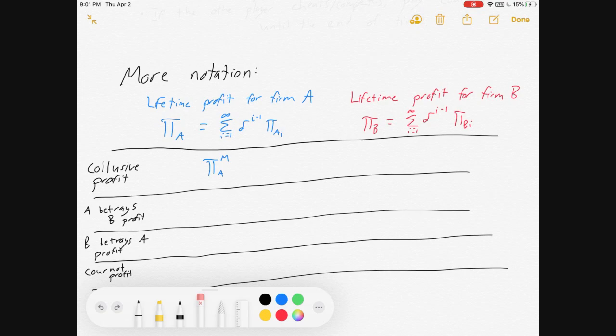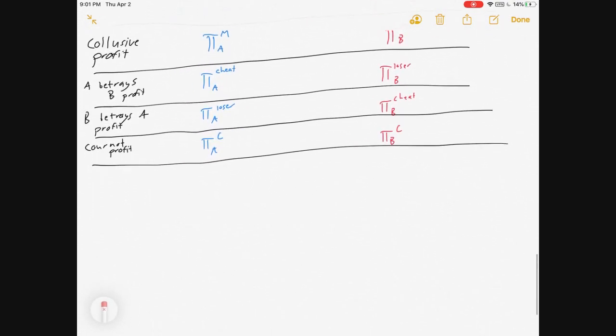So if we look at their collusive profit, we're going to compare collusive profits versus the profits when A betrays B versus the profit when B betrays A versus Cournot profit. Collusive profit, we'll put an M superscript on it to suggest they're splitting monopoly profits. And then the A and B subscript to say which firm they are. If A betrays B, A cheats and gets cheating profit and B is a loser and gets loser profit. If B betrays A, A is the loser, B is the cheater. And then Cournot profit, we'll just put a C on it for Cournot. Quick side note, if they were competing in prices instead, you would just plug in Bertrand here.